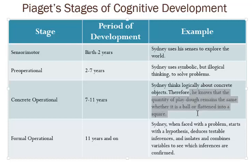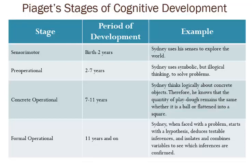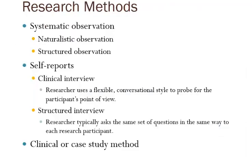The pre-operational stage spans ages two to seven, where children use symbolic but not necessarily logical thinking to solve problems — doing things because they worked last time rather than through deep analysis. The concrete operational stage covers ages seven to eleven, where children think logically about concrete objects — for example, understanding that a quantity of play-doh remains the same whether it's a ball or a square. Finally, the formal operational stage allows thinking much like adults, using hypothesis and experimentation.